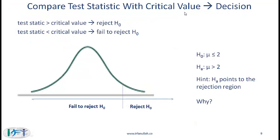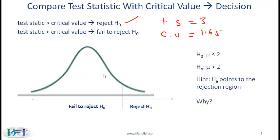Next we compare the test statistic with the critical value and make a decision. If the test statistic is greater than the critical value, we reject the null hypothesis. If it is less than the critical value, we fail to reject it. In our situation, the test statistic is 3 and the critical value is 1.65. Since 3 > 1.65, we reject the null hypothesis. If the test statistic falls to the right of the critical value, that is the rejection region; to the left, we fail to reject.